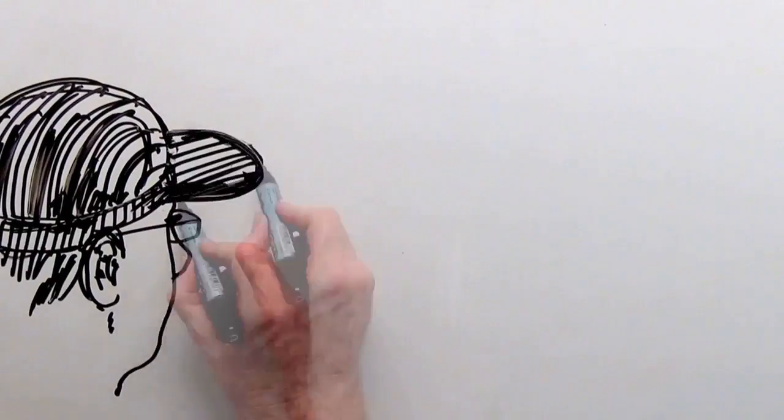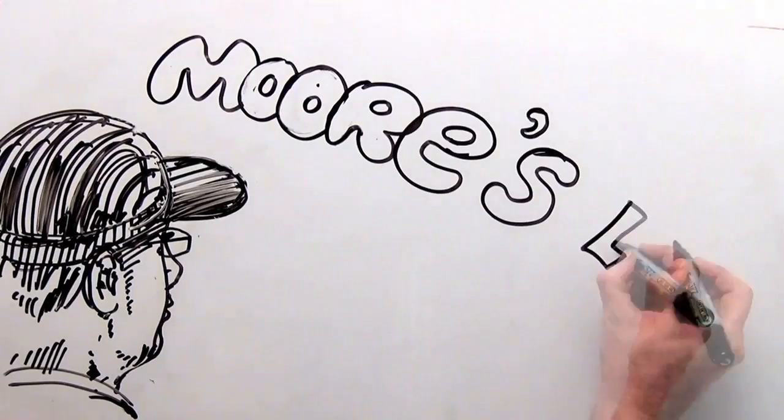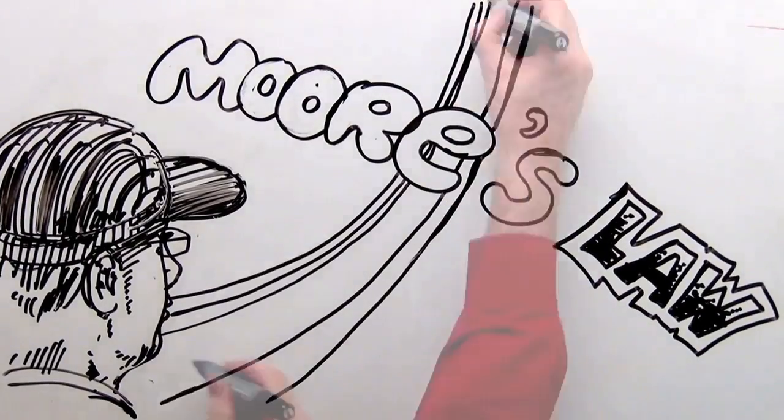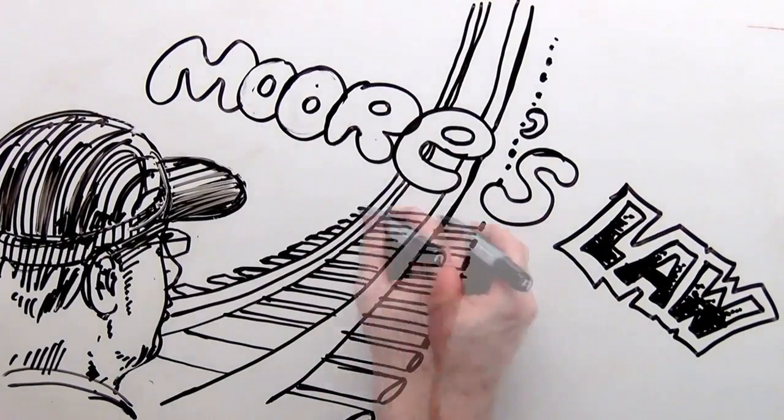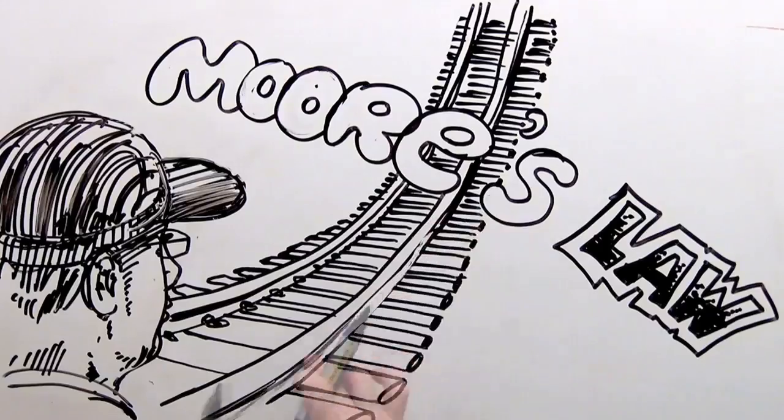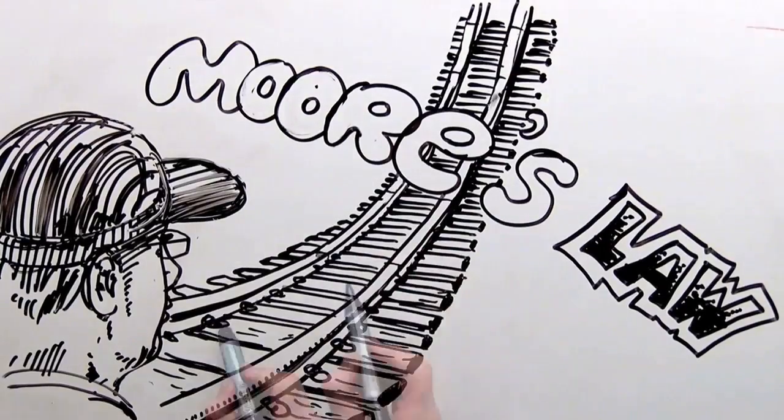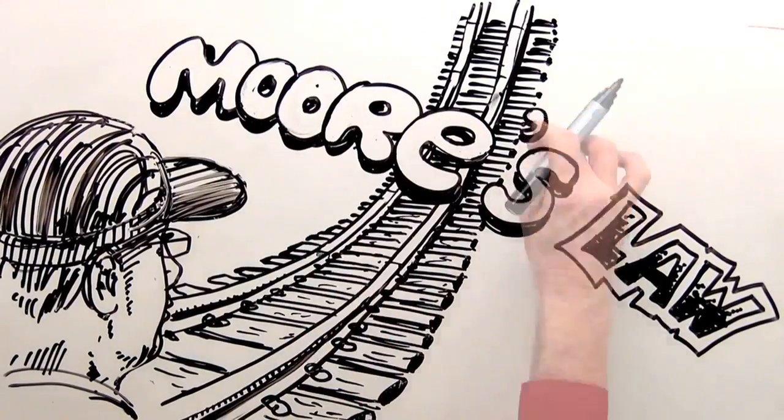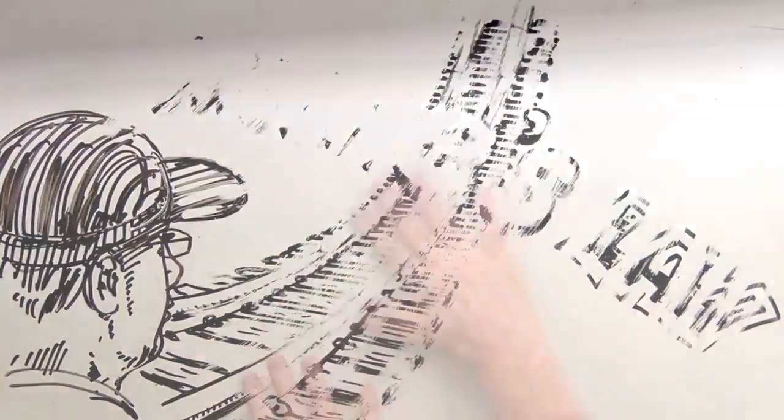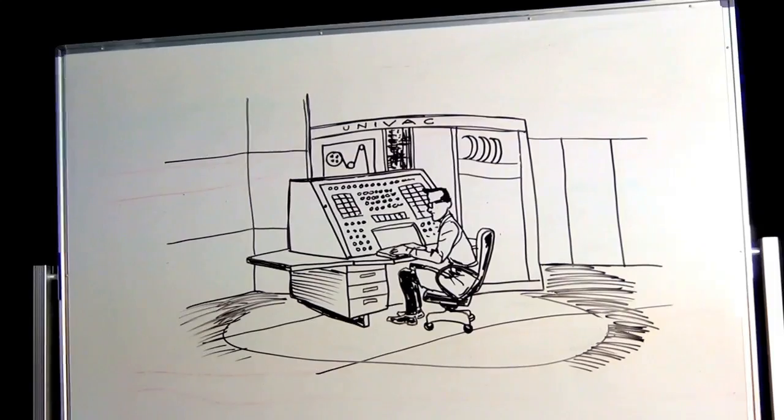It was computer engineer Gordon Moore who, in 1965, observed that computational capability doubles every two years, riding an exponential curve like a runaway train on a skyward track. And now, because of Moore's law, we continue to race past technological waystations at a gravity-defying pace.